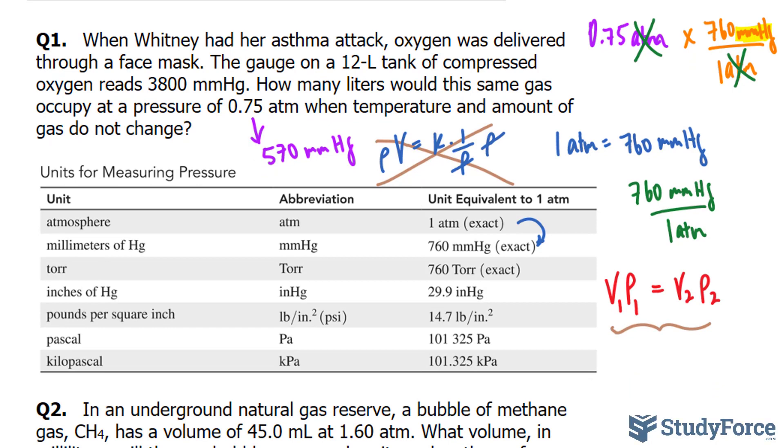Now, the original volume was 12 liters. So I'll write down 12 times the original pressure being 3,800. And that's equal to the volume, so we are looking for liters here. I'll write down V2, multiply to the new pressure, which we calculated to be 570.